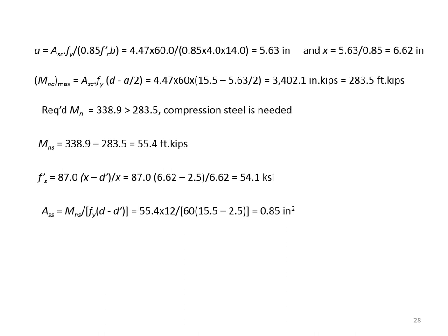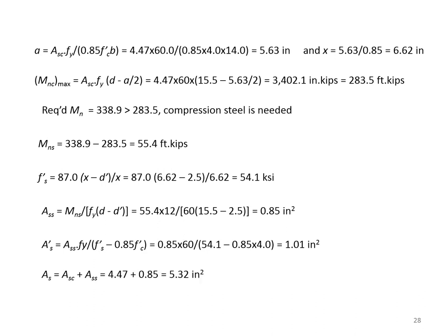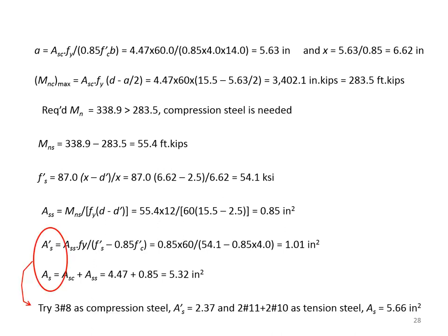Taking M_ns of 55.4 foot-kips and using x of 6.62 inches, f'_s equals 87 ksi times (x minus d') divided by x equals 54.1 ksi. A_ss equals M_ns divided by (f_y × (d minus d')) equals 0.85 sq in. By knowing f'_s, A'_s equals 1.01 sq in. Notice that A'_s is fairly close to A_ss — this is usually the case when f'_s is close to f_y. The total tension steel needed is A_s equals A_sc plus A_ss equals 5.32 sq in.